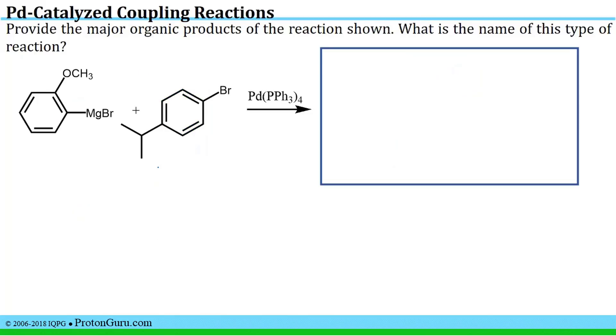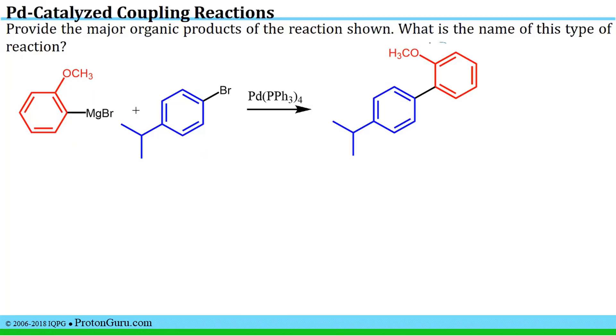Next we're asked to couple this Grignard reagent with this compound that has a leaving group. So we identify that this carbon should couple with this carbon to form the product. We can highlight in colors the two units that will end up attached to each other at that junction point. That allows us to rather easily figure out the product. It should be this piece from the Grignard reagent and this piece from the aryl bromide. The name given to the coupling of a Grignard reagent with an aryl halide is the Kumada coupling.